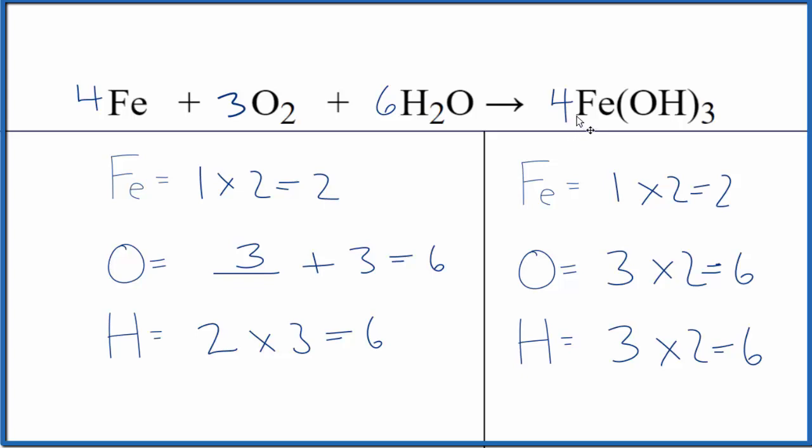So a bit of a more challenging equation to balance. This is Dr. B with the balanced equation for Fe plus O2 plus H2O yields Fe(OH)3. The type of reaction would be combination, and it's also a redox reaction. If you wanted to write the states, they'd look like this. Thanks for watching.